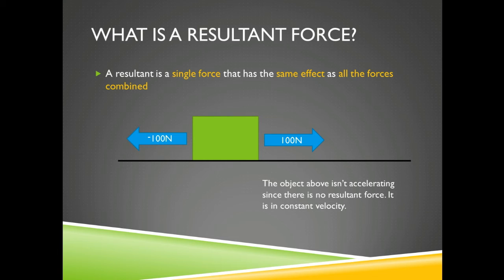For instance, take this object. You can see, if this object was pushed with a force of 100 newtons, but the force of friction was minus 100 newtons on the object, then the object could either be stationary or moving at constant velocity. You have to use the term constant velocity rather than constant speed. So what we say is the conclusion of this is the object isn't accelerating since there is no resultant force.